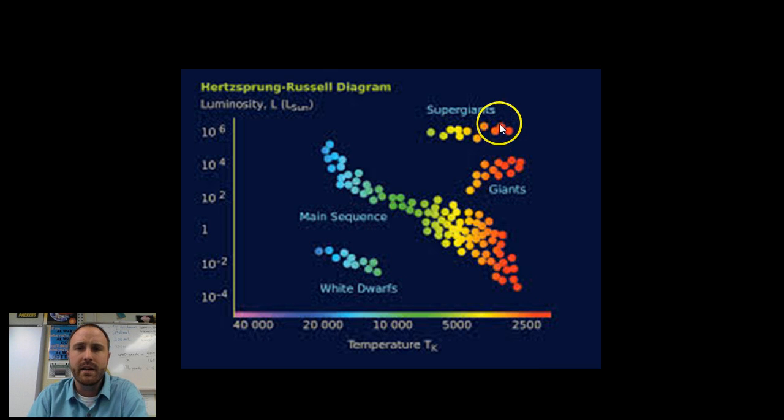And over here we find our brightest and our warmest ones which are the super giants. The white dwarfs are obviously not as bright and they have lower temperatures. So kind of interesting to see how we can organize and classify stars. I hope this helps and thanks for watching.